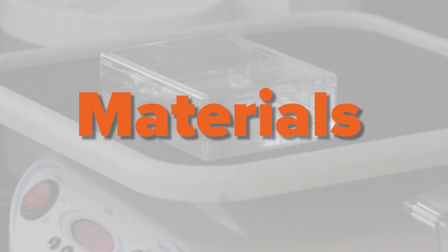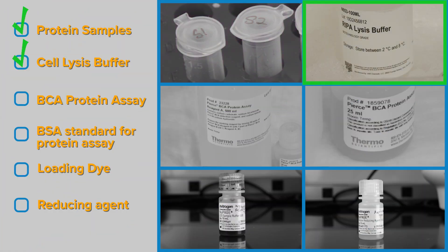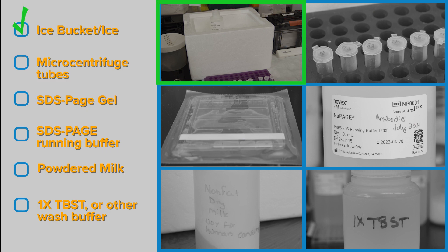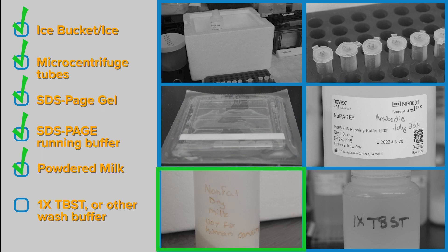It's quite the shopping list, so feel free to take notes. To run a Western, you'll need Protein Samples, Cell Lysis Buffer, BCA Protein Assay, BSA Standard for Protein Assay, Loading Dye, Reducing Agent, An Ice Bucket and some Ice, Microcentrifuge Tubes, SDS Page Gel, SDS Page Running Buffer, Powdered Milk, 1x TBS-T or Other Wash Buffer,